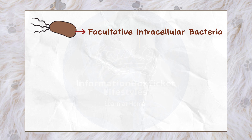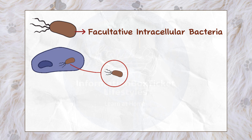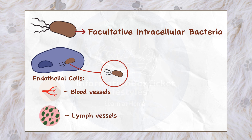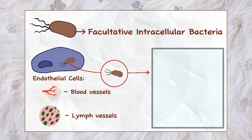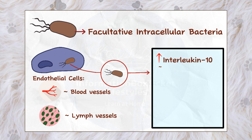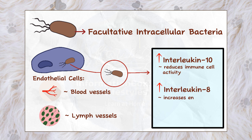Bartonella henselae is a facultative intracellular bacterium, which means it has evolved to survive within cells to elude the immune system. It hides inside endothelial cells, which line the inside surface of blood and lymph vessels. Once within the endothelial cell, Bartonella henselae can stimulate the synthesis of interleukin-10, which reduces immune cell activity, and interleukin-8, which increases endothelial cell proliferation.